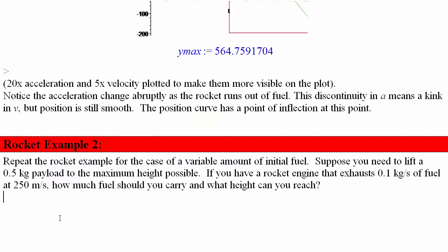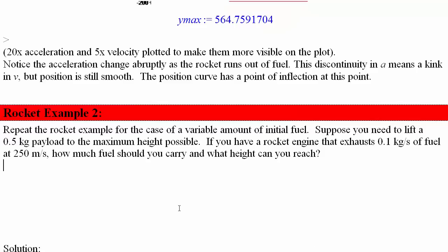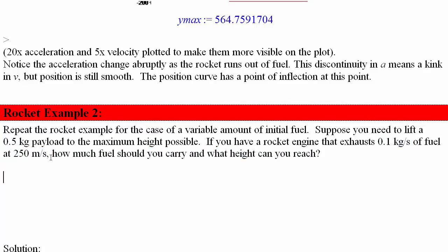Rocket example two is an exercise to repeat the rocket problem but with a variable amount of initial fuel. Previously, initial fuel equaled half the initial mass. Now, we need to lift a 500-gram payload to the maximum possible height and can put on as much fuel as we like. The fuel exhausts at 0.1 kilograms per second at a nozzle velocity of 250 meters per second. How much fuel should you carry, and what's the maximum height?